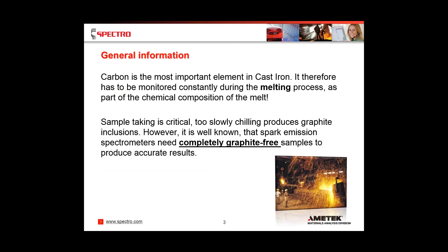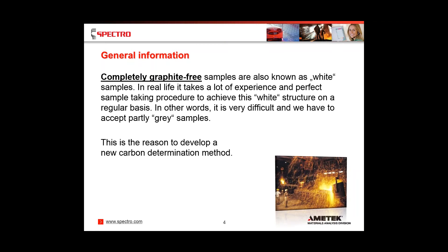Carbon, as you all probably know, is the most important element in cast iron. It therefore has to be monitored constantly during the melting process as part of the chemical composition of the melt. Sample taking is critical. Chilling too slow produces graphite inclusions. It is well known that spark emission spectrometers need completely graphite-free samples to produce accurate results. Completely graphite-free samples are also known as white samples. In real life, it takes a lot of experience and perfect sample taking procedure to achieve this white structure on a regular basis. In other words, it's very difficult and we have to accept partly gray samples. This is the reason to develop a new carbon determination method.